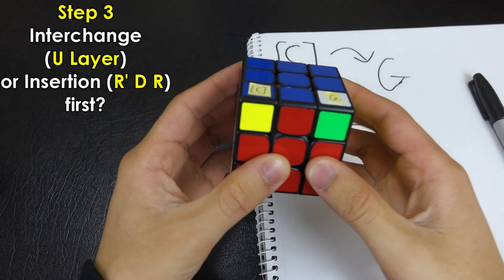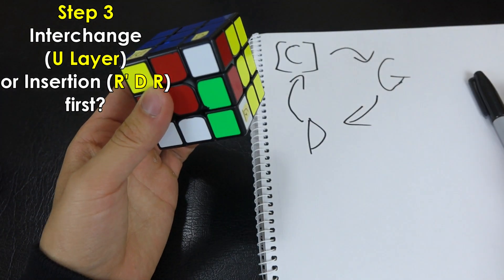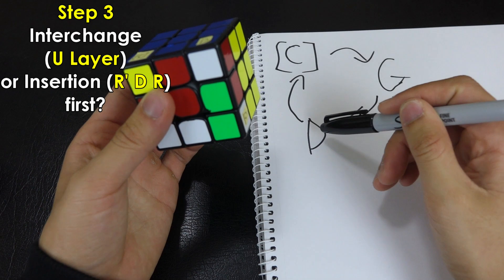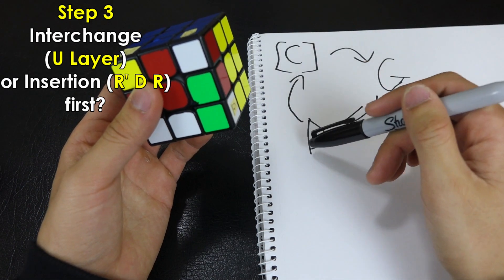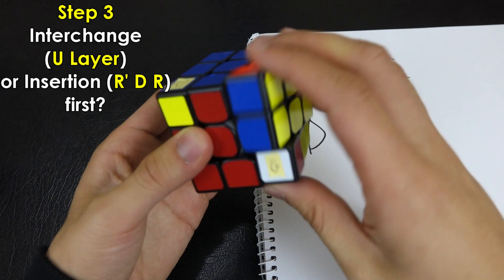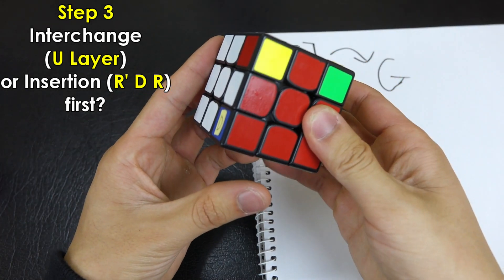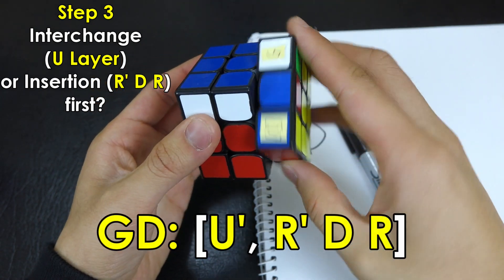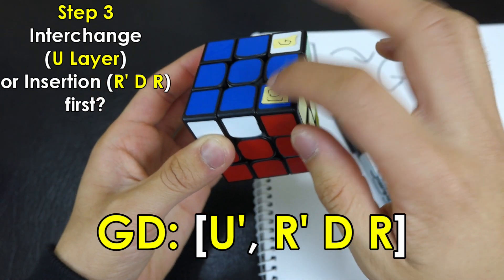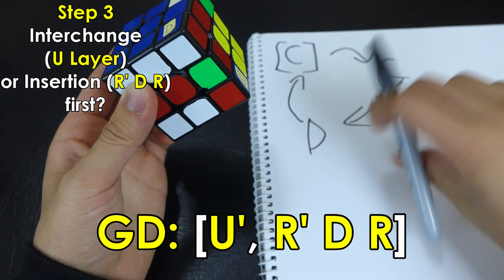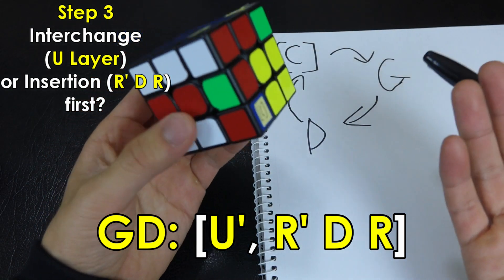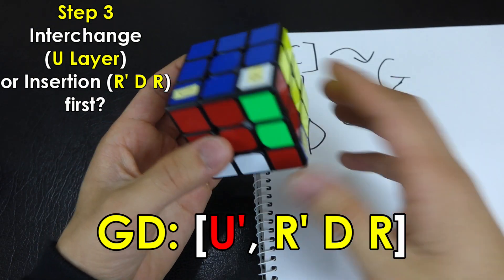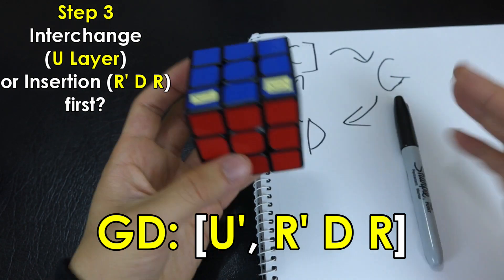If I were to insert straight away, I would get D to where G is, but that's not what we want. We want D to go to where C is, because that's part of the cycle. If we do a U' first, so the interchange first, and then we do the insertion, note how D is going to where C is. This is part of the cycle. And then what you do for the second half is that you just literally undo what you just did. Undo that interchange, undo that insertion, and voila, you keep it solved.